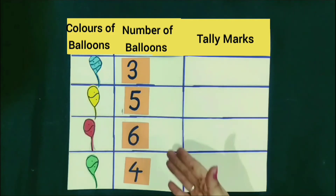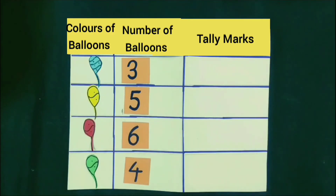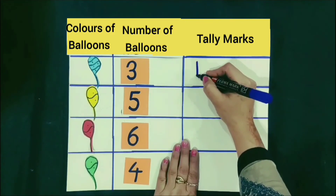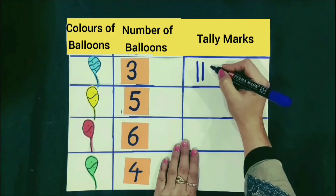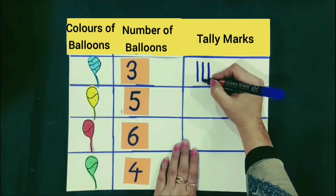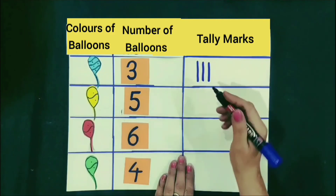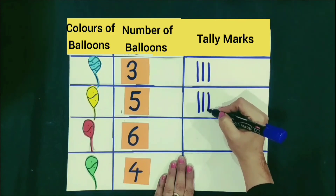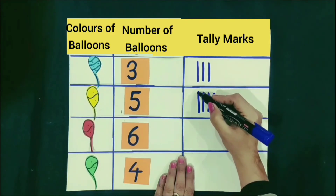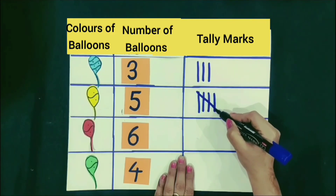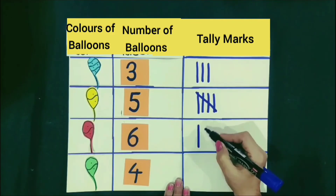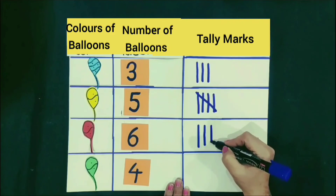Now, we represent the different number of balloons by using tally marks. First is number three — we represent three as one, two, three standing lines. Next is number five — we represent five as one, two, three, four standing lines and placing one slanting line on it. Next is number six — we represent six as one, two, three, four standing lines with a slanting line and one more standing line.